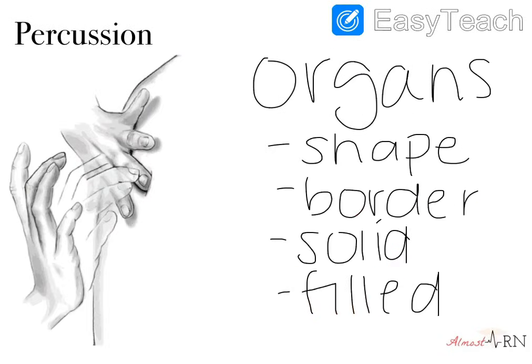Percussion — this is tapping. This is an image right here of what percussion is used for, and this is all about organs. If you do this on your stomach, you can actually map out the shape and border of the organs. You can tell by the sound it makes once you tap against your fingers if it's a solid organ or a filled organ. As nurses, it's simple — we have two hands and we're able to tell a lot about a person's internal anatomy just by using our hands.